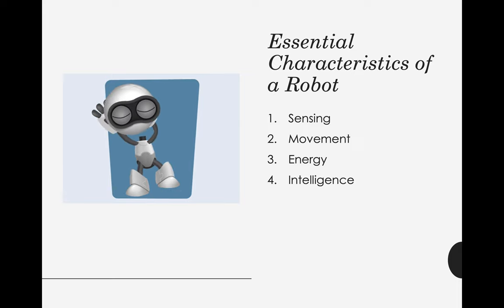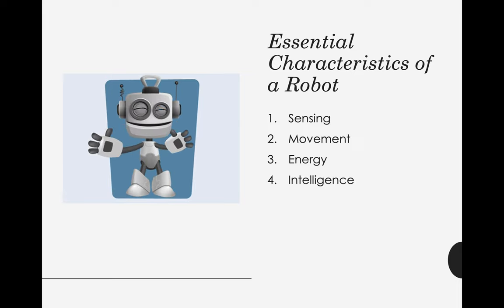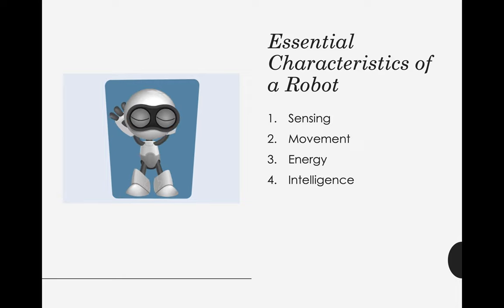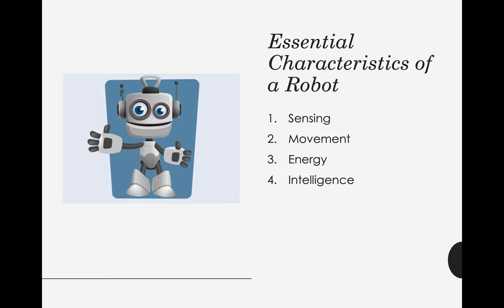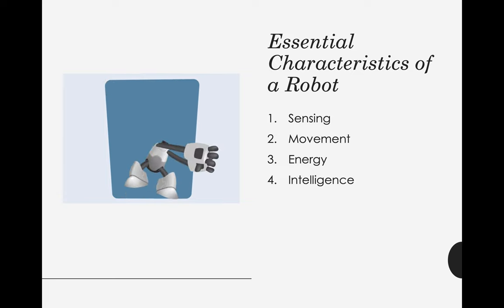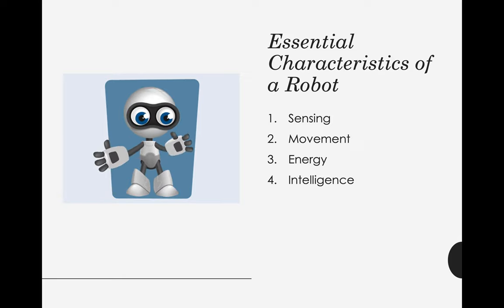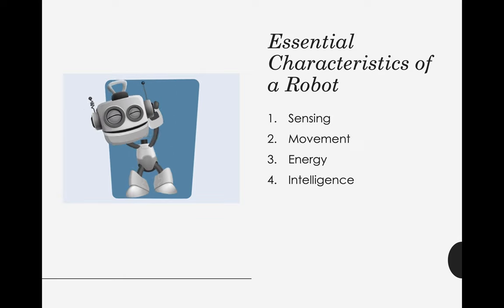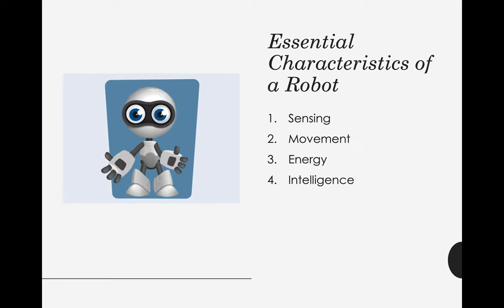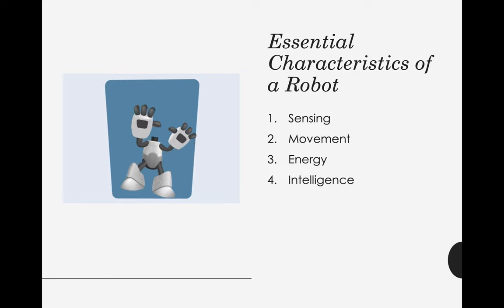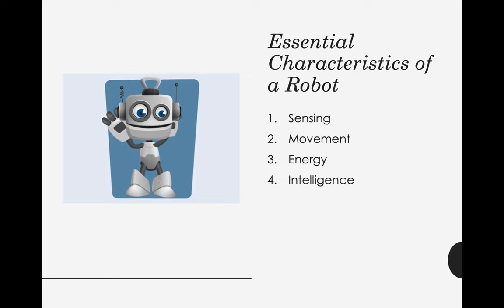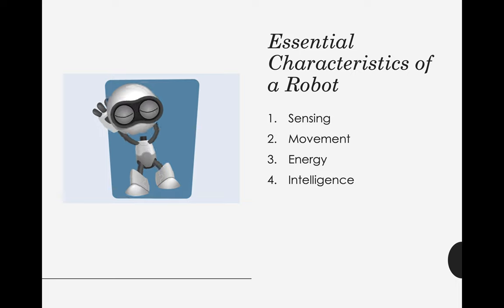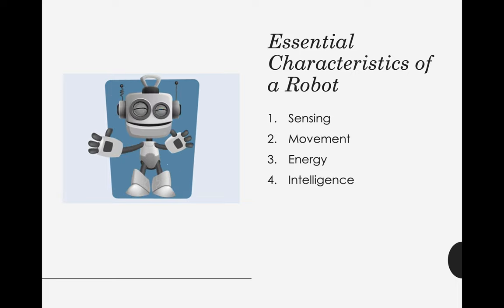We need to talk about the four essential characteristics of a robot. Without these characteristics, it is not a robot. First, your robot should have sensing. Second, your robot should move — the robot should have movement. Third, the robot should have energy or a power source, just like our body needs energy. And the last essential characteristic: we have intelligence, or this should be the brain.